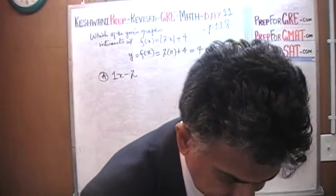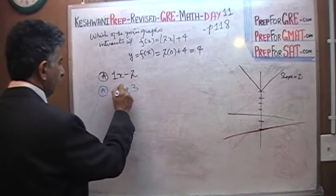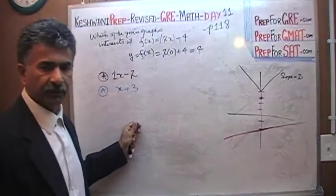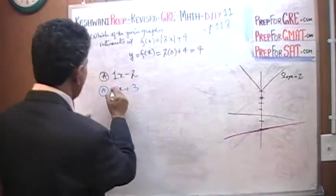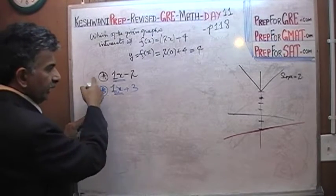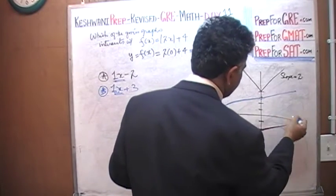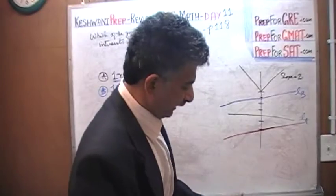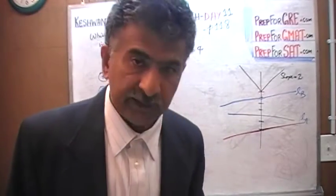The second equation given is x plus 3. Same logic: when x is 0, y is 3, so the y-intercept is at 3. But again, this line has a slope of 1 — just like answer A. These two lines are parallel to each other. Both have a slope of 1, and as x increases they get farther and farther from the original graph. So A and B are not the answer.